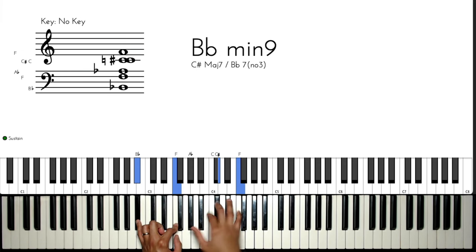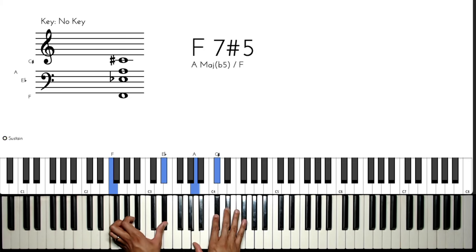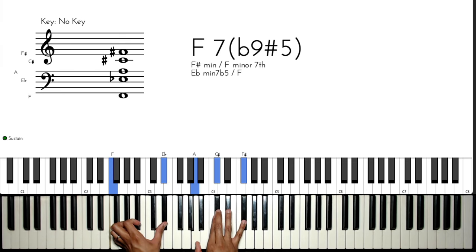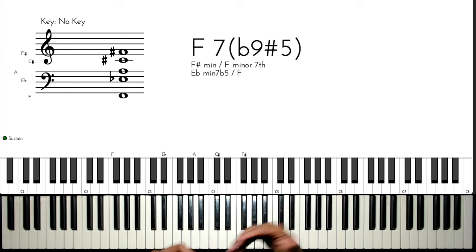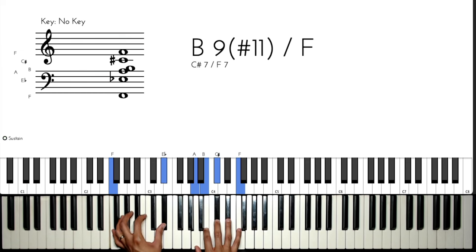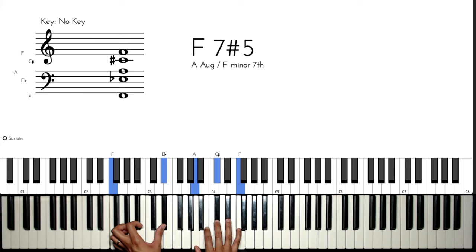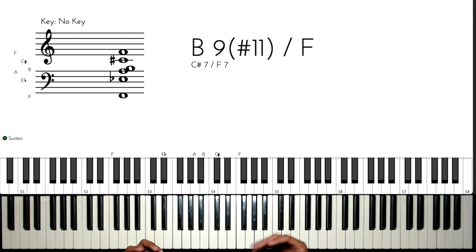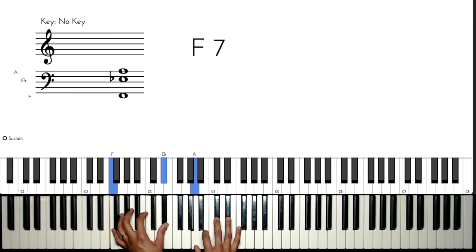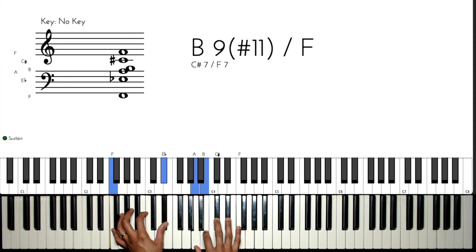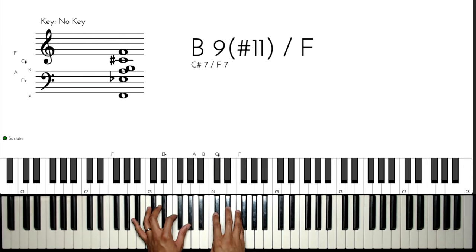Going back to that passing chord, we can actually substitute it for another version of this F dominant — an F7 sharp five. I like adding the B in here as well, which gives it a little bit more dissonance, and that leads us to the six.